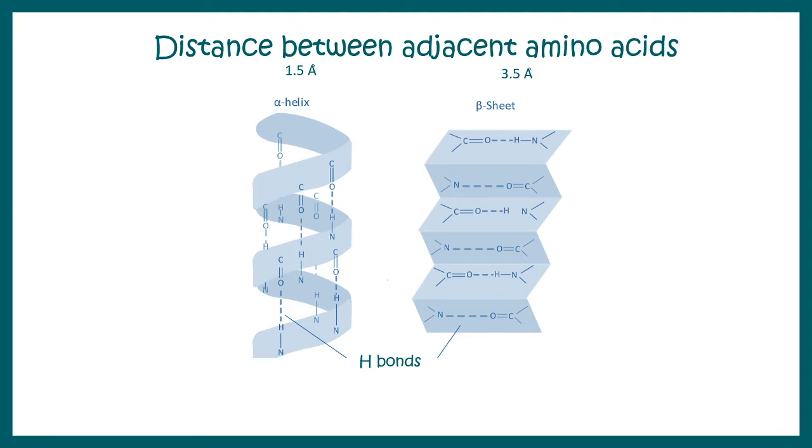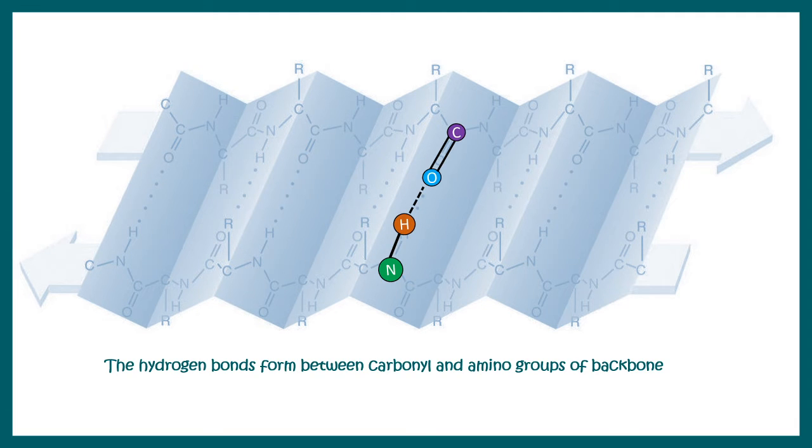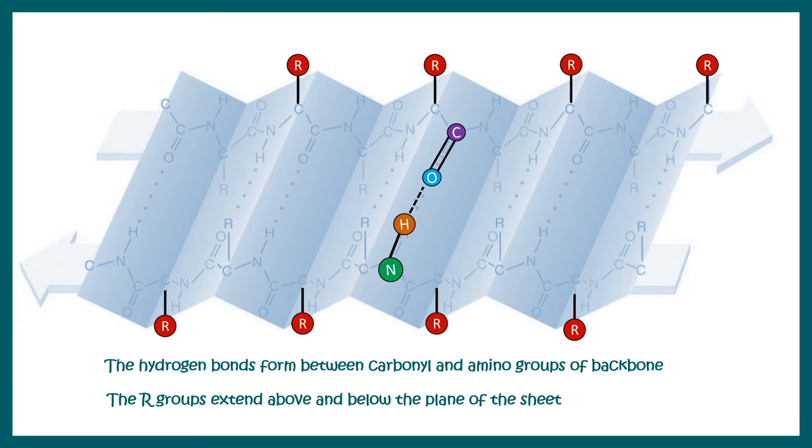Beta pleated sheet can be organized into two different orientations: parallel and anti-parallel. In this particular orientation, the beta pleated sheet has all the hydrogen bonds in a particular plane, in a planar fashion, and all the amino acid R groups are protruding out from the plane either upwards or downwards. This itself is reducing the steric constraint.